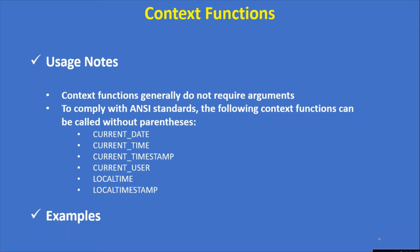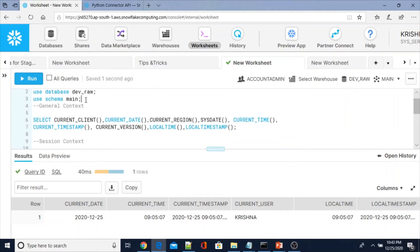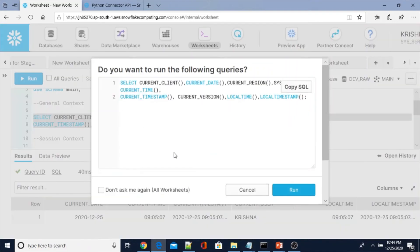Context functions generally do not require arguments. To comply with ANSI standards, the following context functions can be called without parentheses. Basically, for most of these functions we use parentheses. Let me now execute the general context functions — under context functions, if you see here, these are all the general context functions.